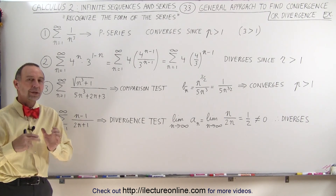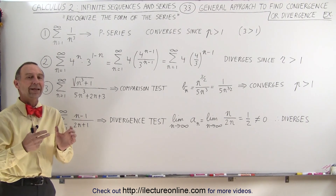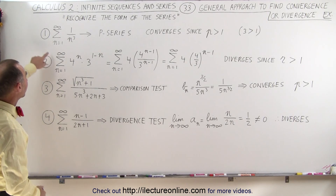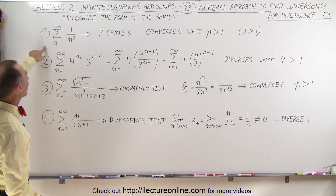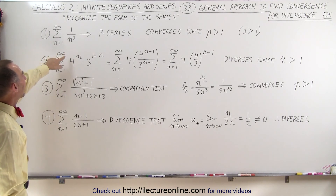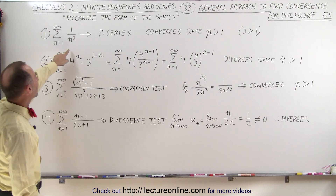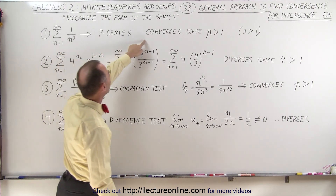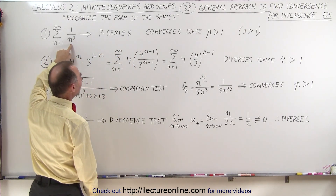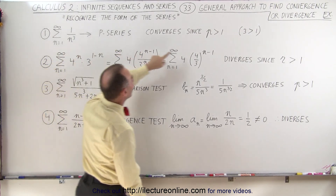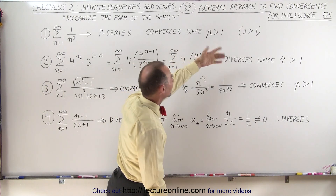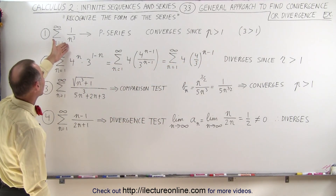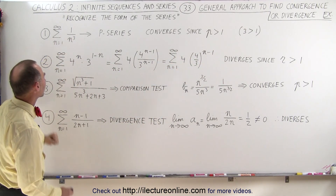Here we're going to show a little bit more detail starting with the first four. On the first one we have what we call a p-series, and this p-series will converge because the exponent in the denominator is greater than one. Three is greater than one, so therefore we can assume that this p-series will converge.